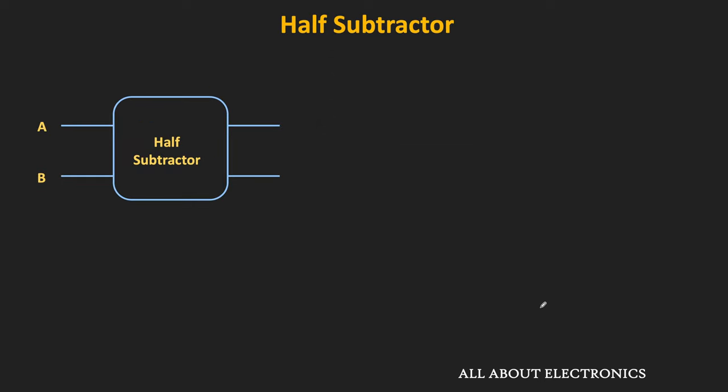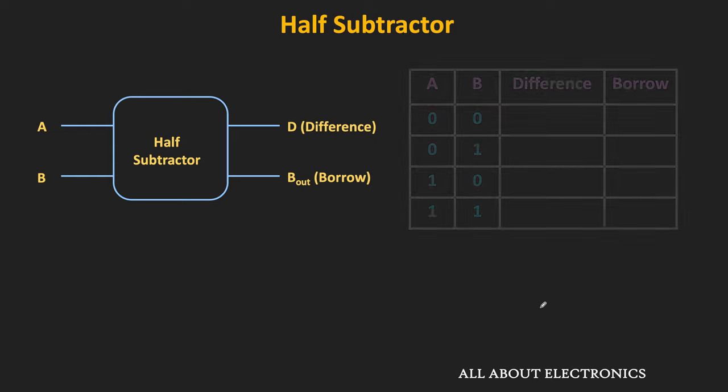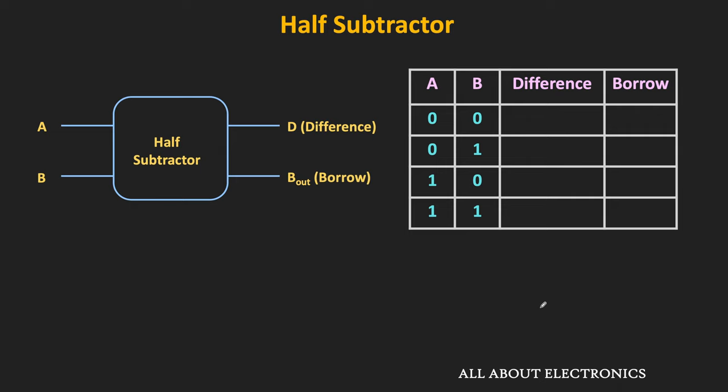So this half subtractor is the combinational circuit which subtracts the two bits. And as a result, it gives the difference and the borrow output. So now let us see what is inside this half subtractor, and for that, first of all let us see the truth table. So since there are two inputs, there are total four possibilities. So whenever both inputs A and B are 0, then this difference and the borrow output will be equal to 0.